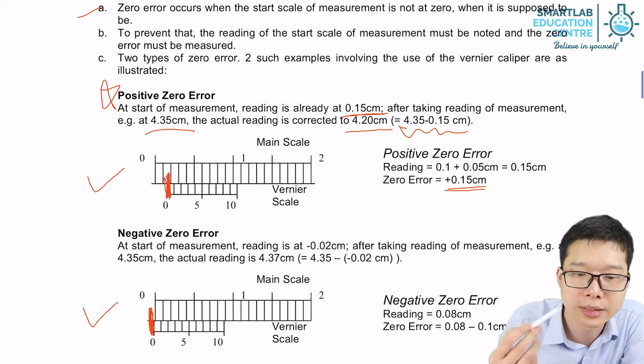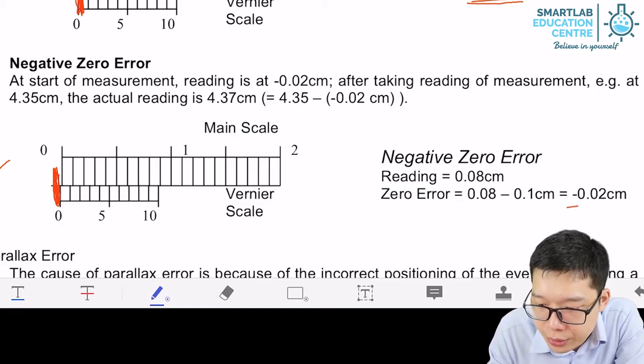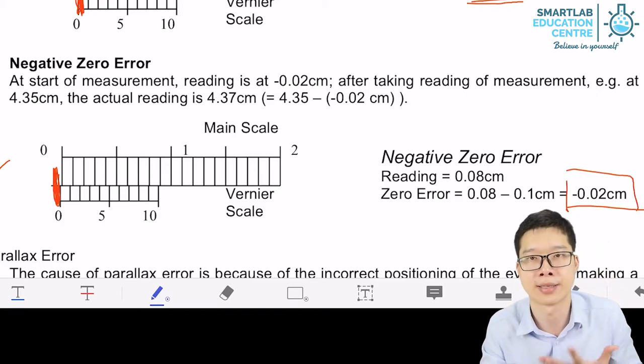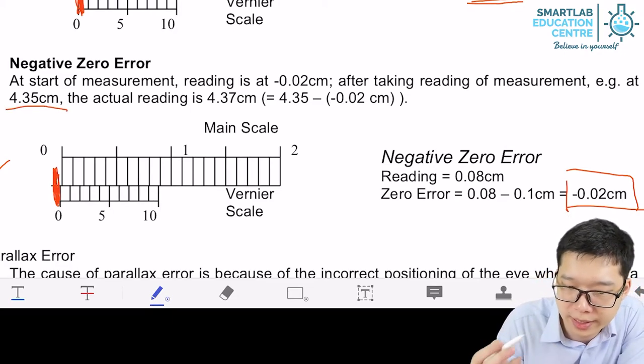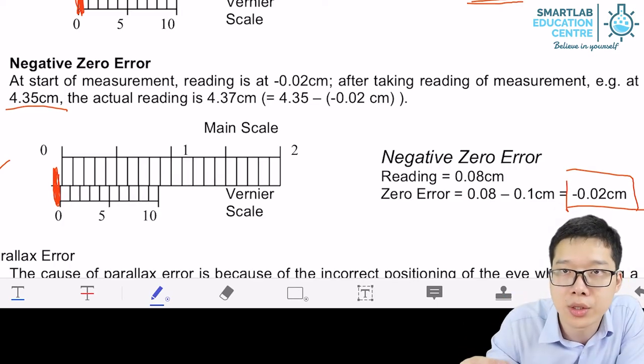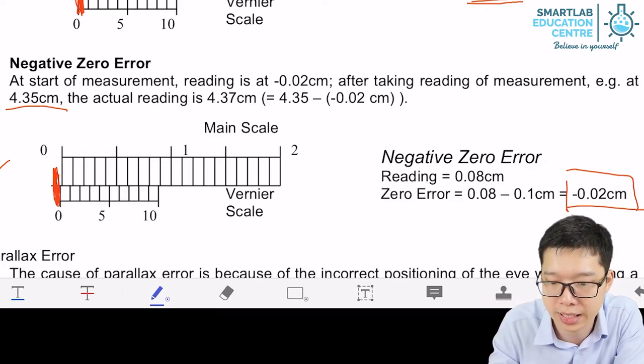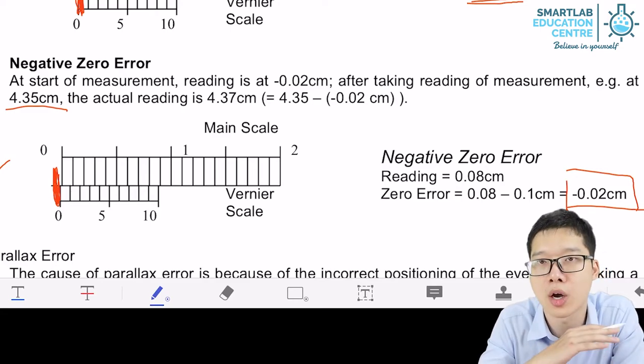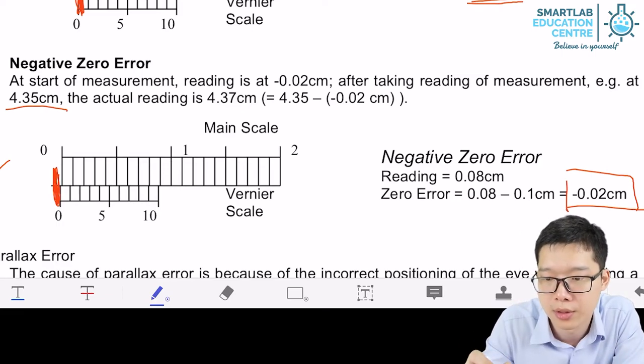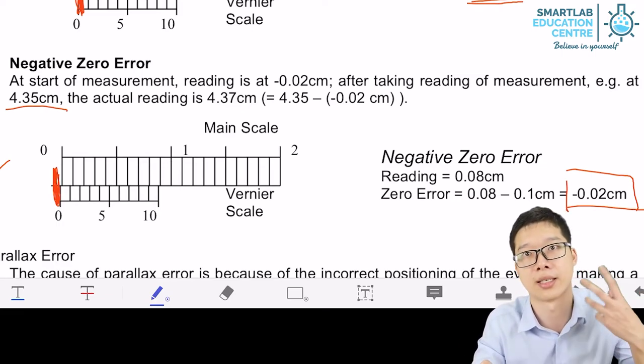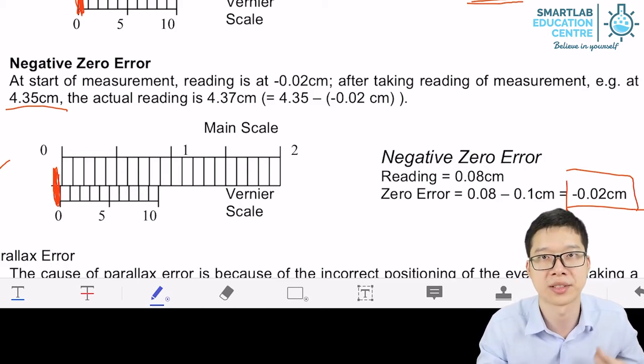And for negative zero error case over here, negative zero error means you have a negative number as the error. So if the final reading is 4.35, we need to minus away the minus number, or using our math, we are actually plussing something. Plus 0.02, or just take it as always minus away the error, always minus away the error. So if positive, we minus away a positive number. If it's negative, we minus away a negative number, which is equivalent to plus some extra number.